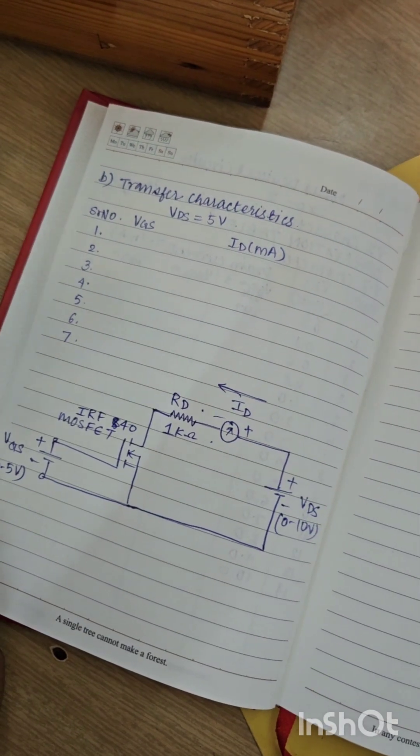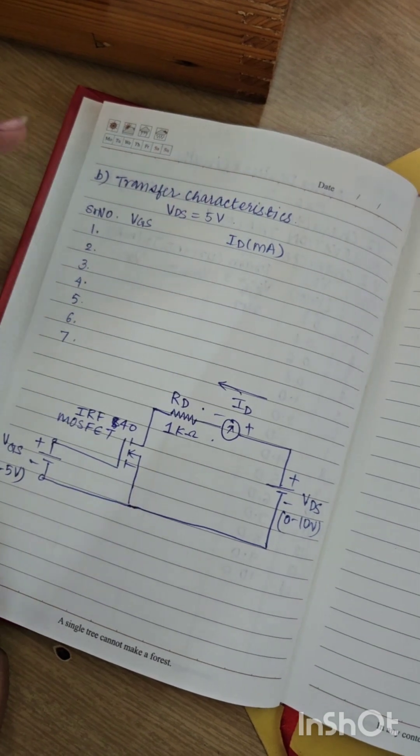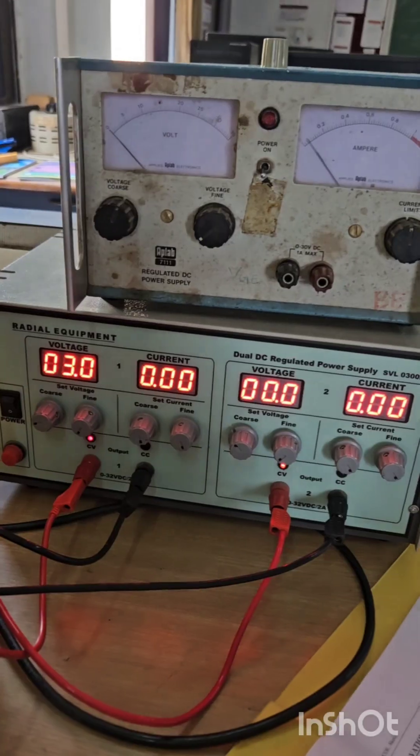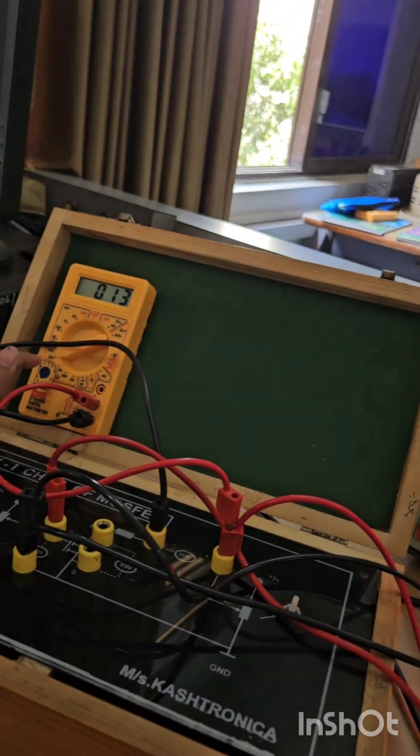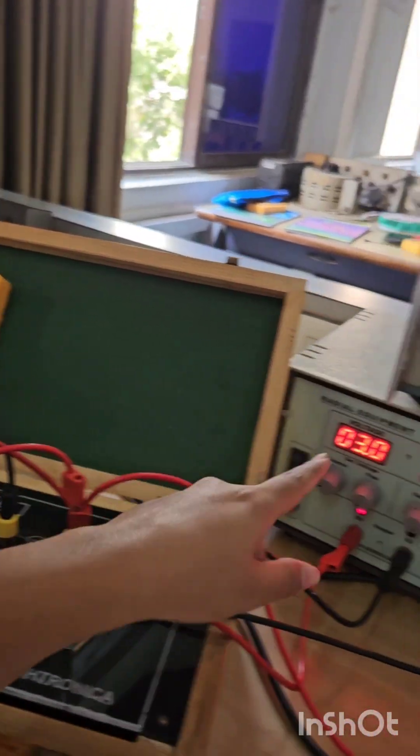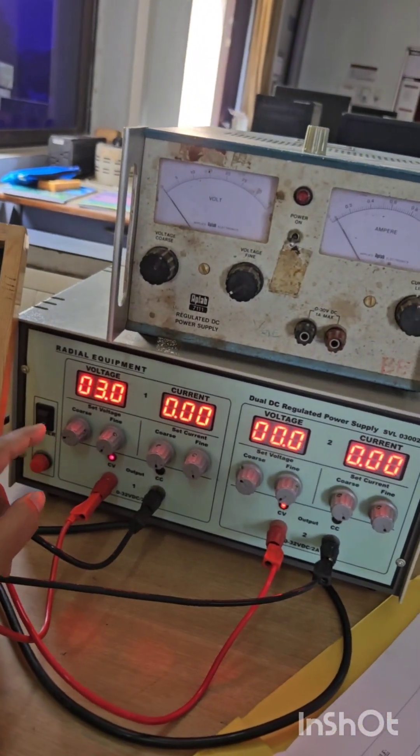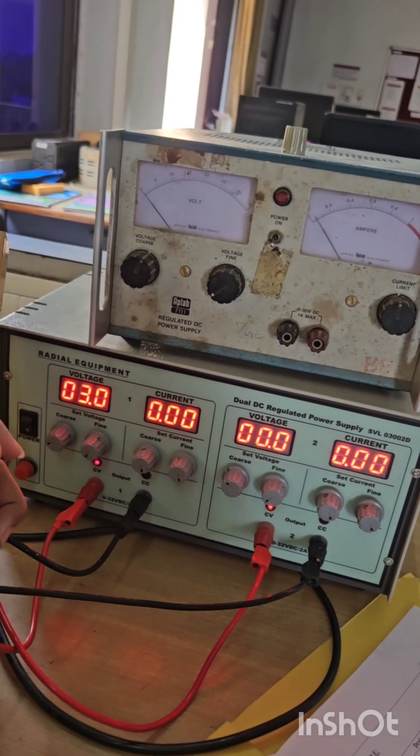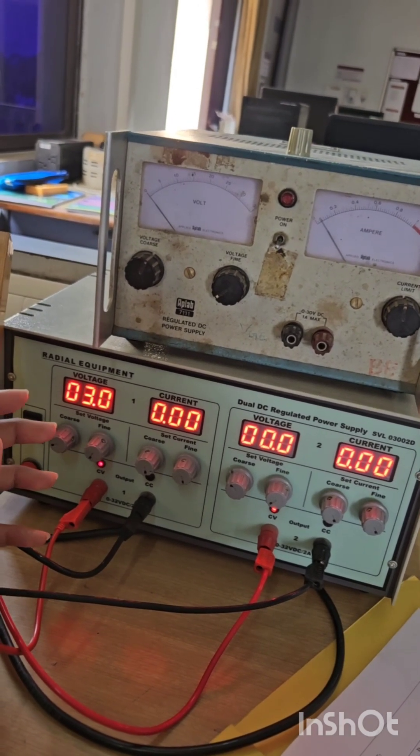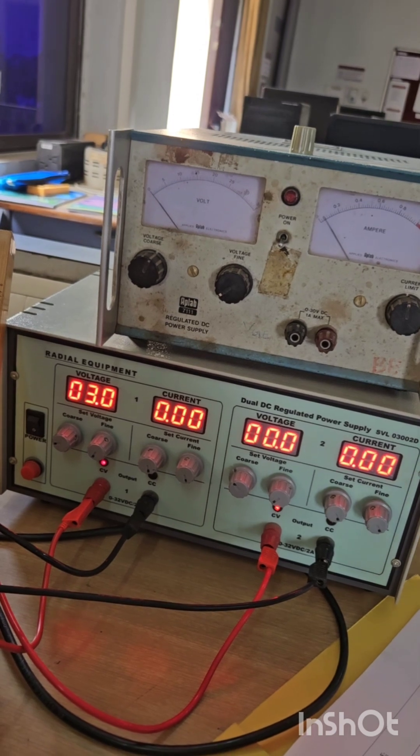Part 2 of the same experiment is for transfer characteristics. In the previous part, when ID was greater than 200, VGS was equal to 3 volt. This value is equal to VGST, that is threshold gate voltage, which is required for starting the MOSFET.